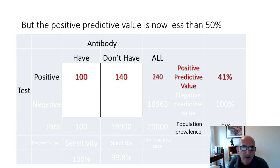That should give you a note of caution about interpreting diagnostic tests in general. It's really important to understand the population in which a test is going to be used in order to understand how it performs. Sensitivity and specificity do not vary across populations, whereas positive and negative predictive values do.